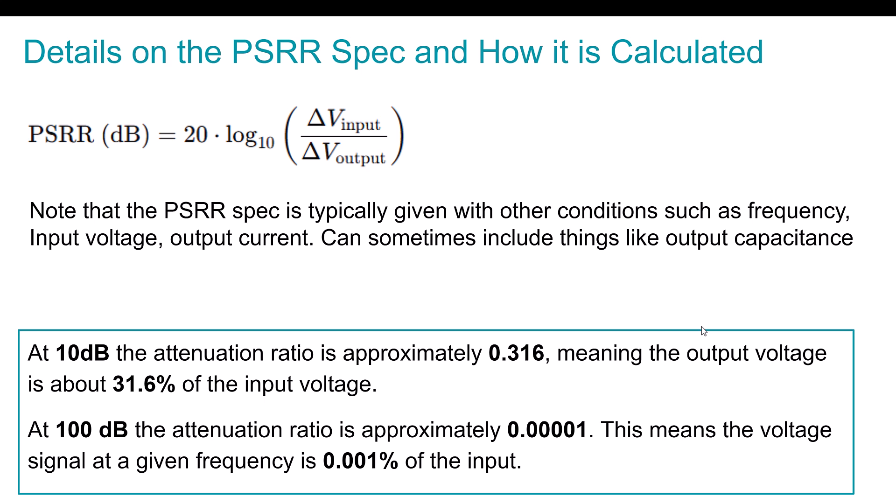Now, this PSRR spec is not calculated in a bubble. There's other conditions or states that are important that go with it. The first one is frequency, right? That change in V input is typically done at a certain frequency. So it may be 100 hertz, 1 kilohertz, 10 kilohertz, so on and so forth. The way that I see manufacturers come up with this spec is they take a very clean DC level and they modulate it with typically like a sine wave at different frequencies. And then they see, if we have a linear regulator, how much of that sine wave is shown through to the output because of the output, we just want DC. And they use that ratio to give the PSRR specs. And like I mentioned, it's typically done at different frequencies, and we'll look at some examples.